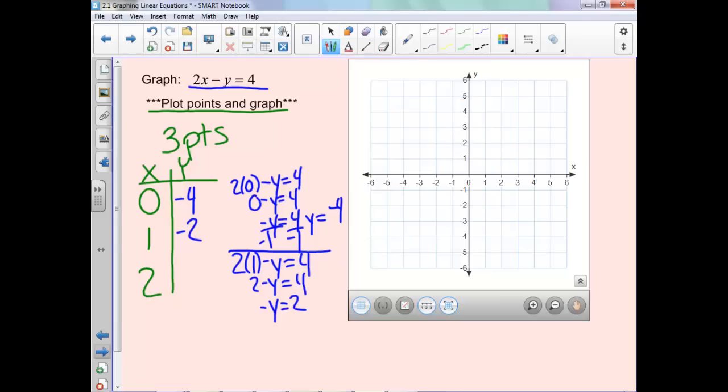This last one, we'll have 2 times 2 minus y equals 4. So 4 minus y equals 4. Subtract 4 from both sides. Negative y equals 0, so our y coordinate will be 0.